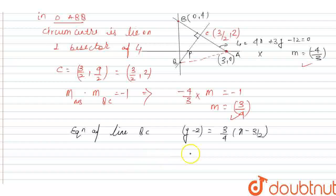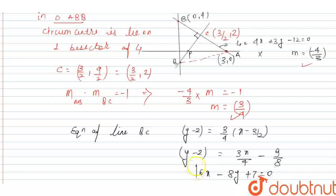And when we solve, then we can get Y minus 2 equals 3X by 4 minus 9 by 8. And when we solve, then we can get 6X minus 8Y plus 7 equals 0.